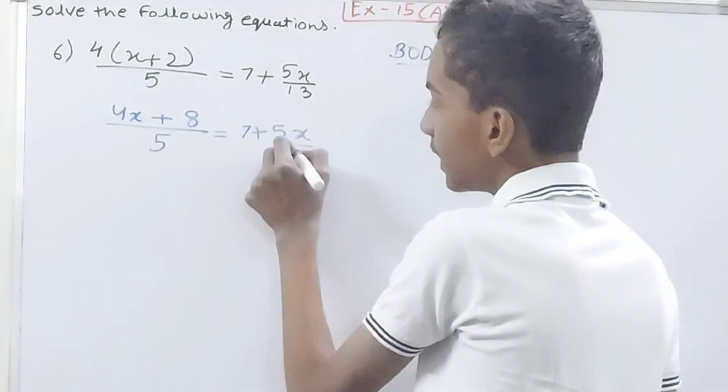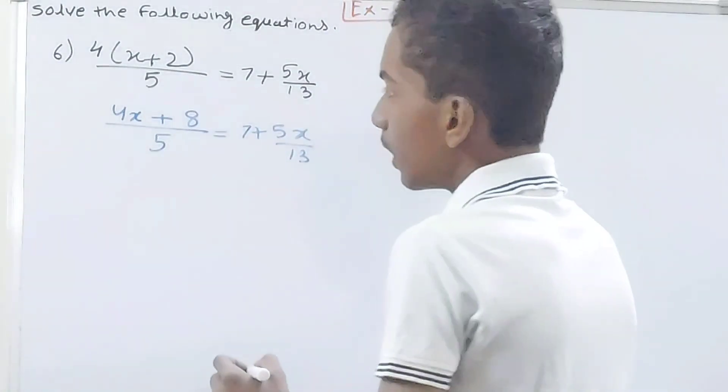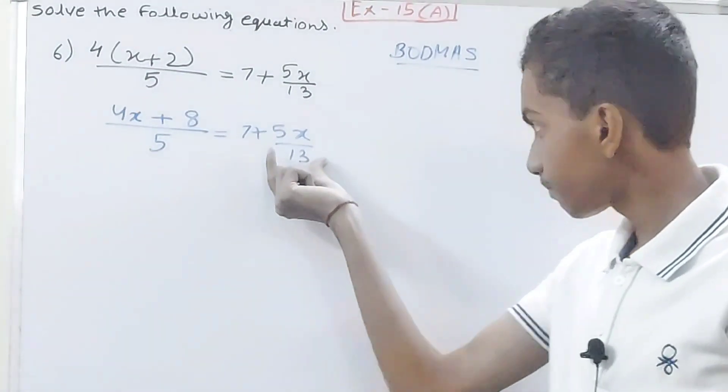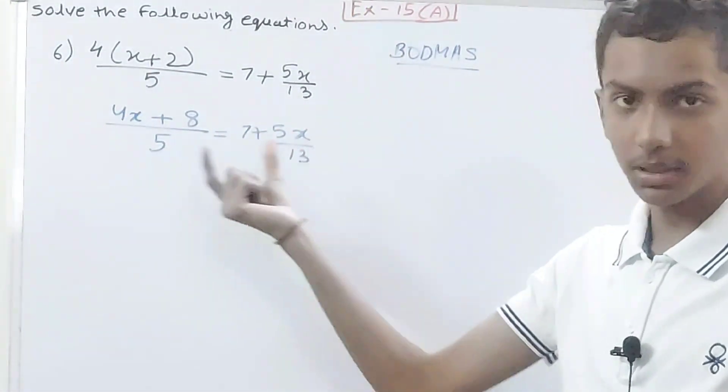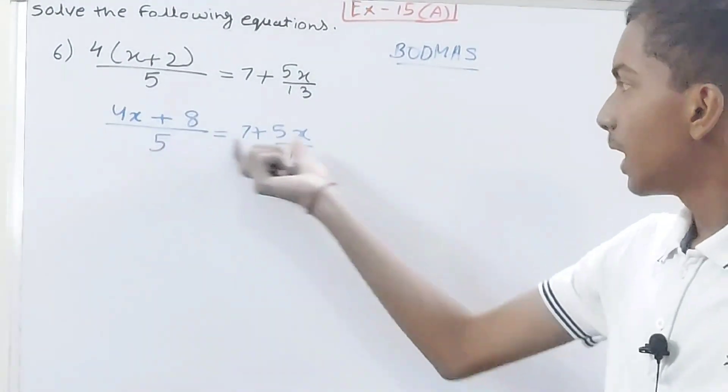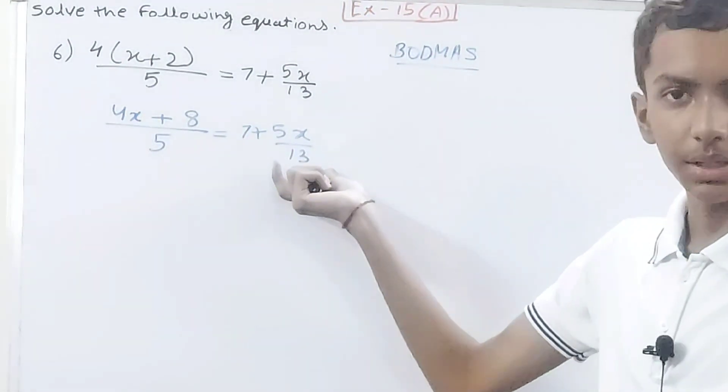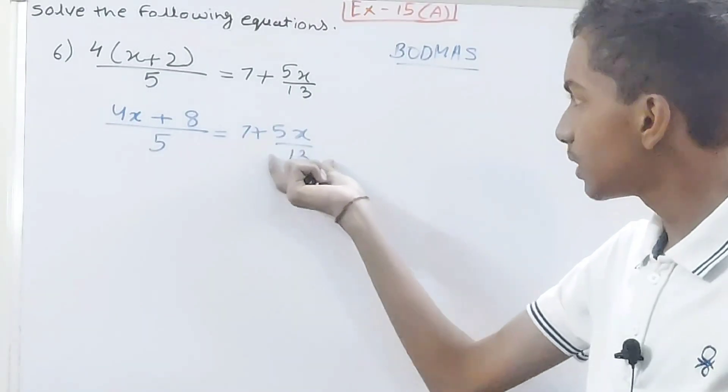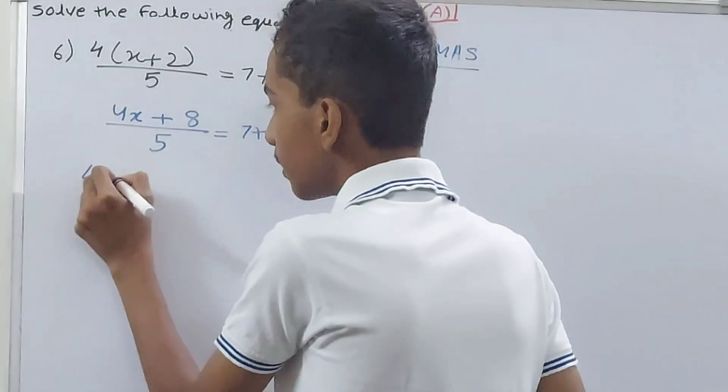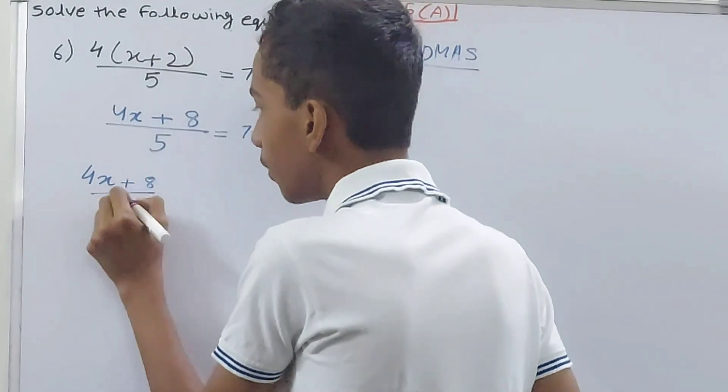Now what I will do is, there are many ways to solve these equations. I see 5 over here and 5x by 13 over here, so what I will do is I will take this to this side. So what you will have is 4x + 8 upon 5 minus 5x upon 13 equals to 7.